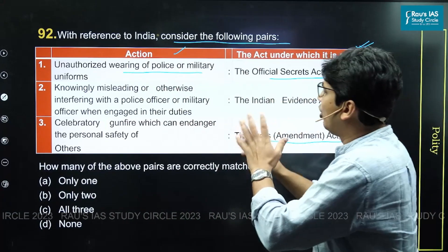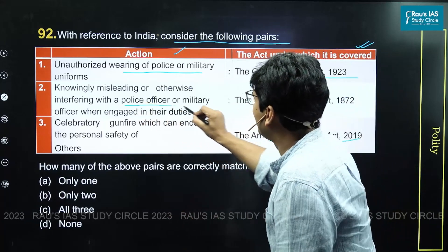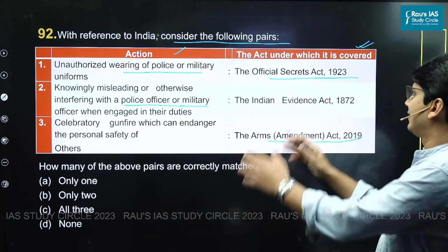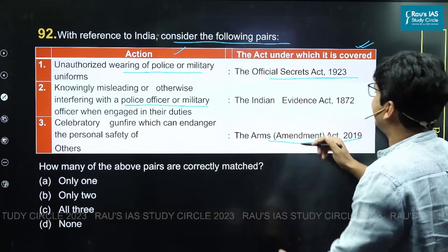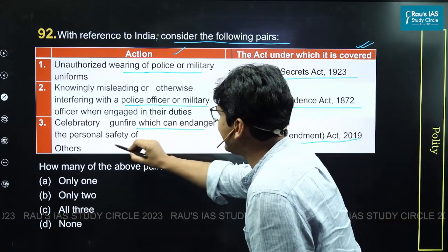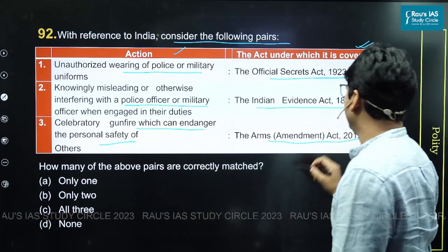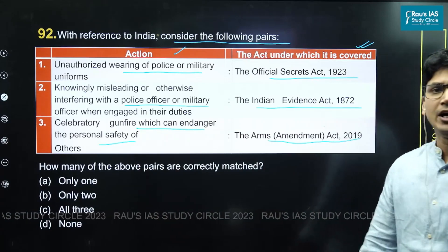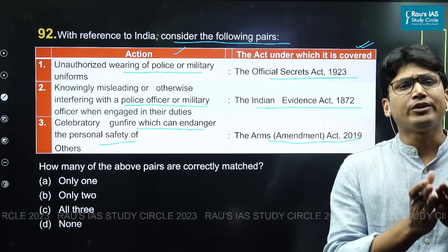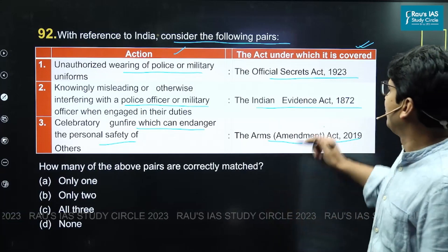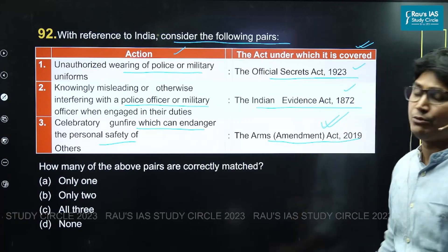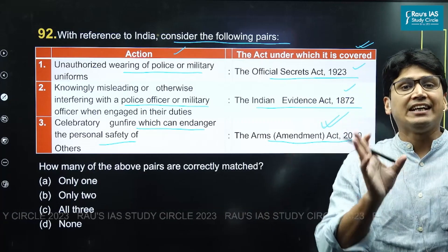The second pair is knowingly or otherwise interfering with a police officer or military officer when engaged in their duties, with the act listed as the Indian Evidence Act. The third pair is celebratory gunfire which can endanger the personal safety of others, listed under the Arms Amendment Act of 2019. We need to identify the correctly matched pairs.